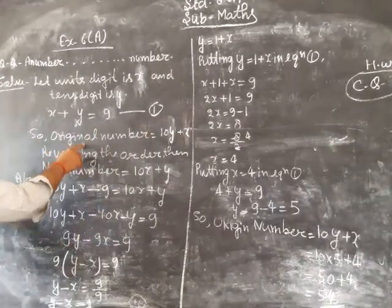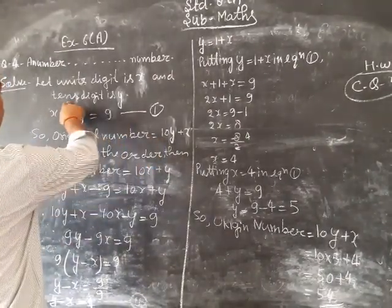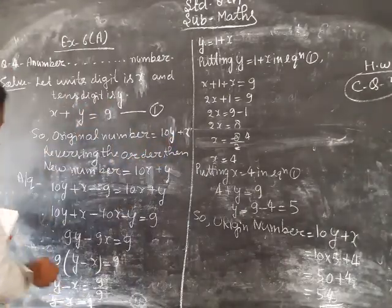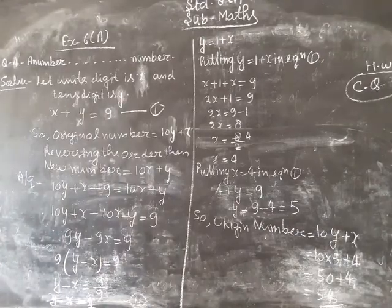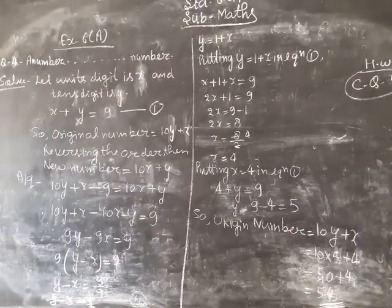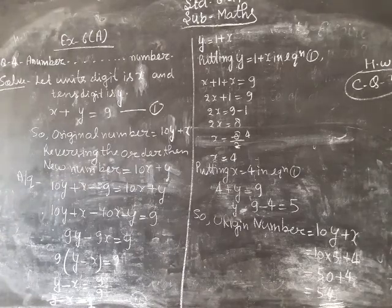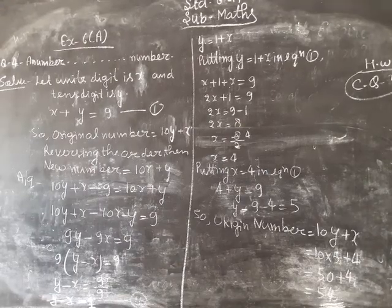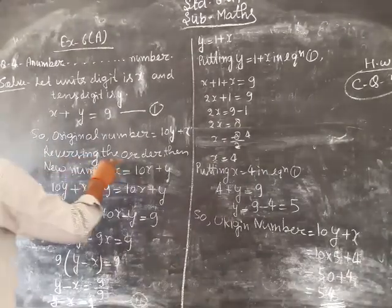So the original number equals 10y, because the tens digit is y, so 10y plus x. If 9 is subtracted from the number, the digits interchange their places. Reversing the order, then the new number equals...